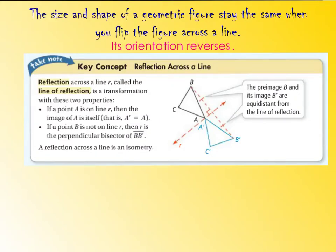So what's really important to understand about a reflection is that your shape is going to be the same size, same shape. It's not going to change. It's just going to flip across that line, which makes the orientation reverse.